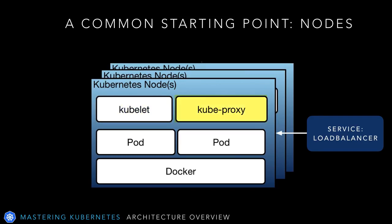KubeProxy is the glue on each node that makes sure the network services exposed by each pod on the node can be accessed as defined in the deployment. You may recall when we set up a Tomcat service, we created a node port service to allow the outside world to connect to it on port 8080. KubeProxy was the glue that made that happen.